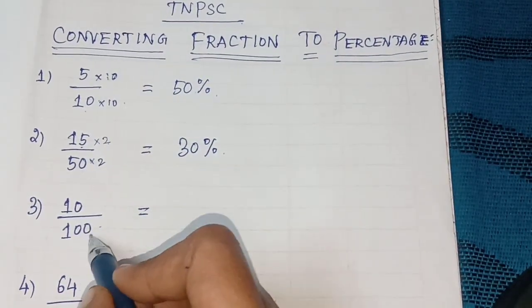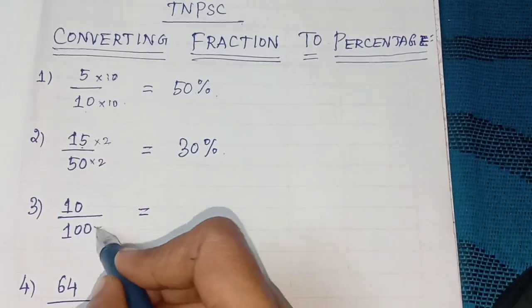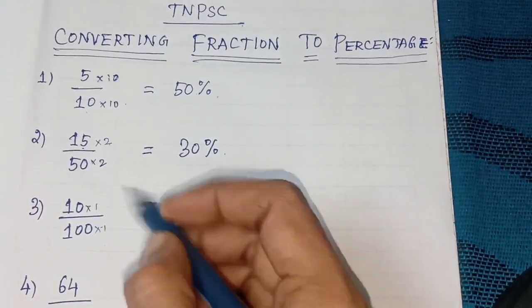This has 100 in the denominator. So multiply by 1. 10 into 1, 10 percent.